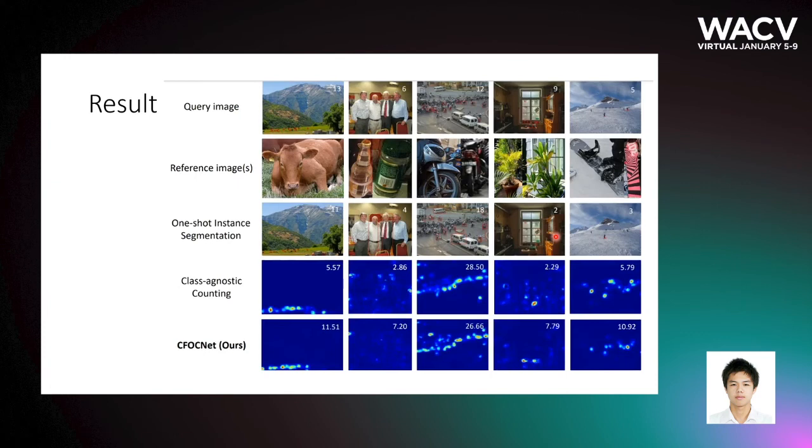This is the visualization result of our method versus previous works. The first row is the query image, the second row is the reference image, sample from data testing set, and the third, fourth, and fifth row show the predicted result of similar works in our CFOCNet. The number in the upper right corner represents the final count. We can observe that our method performs better than other works, quantitatively and qualitatively.